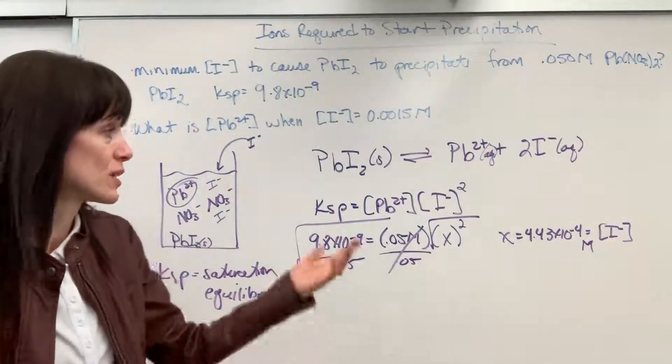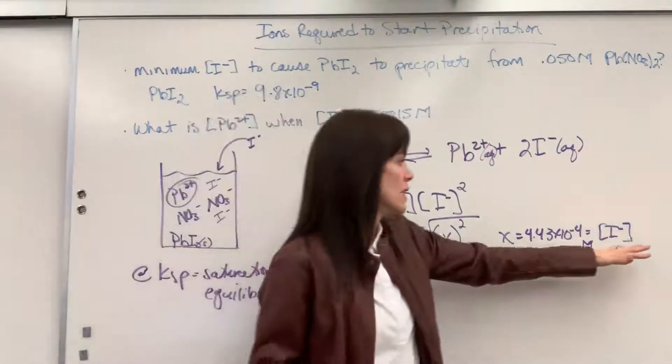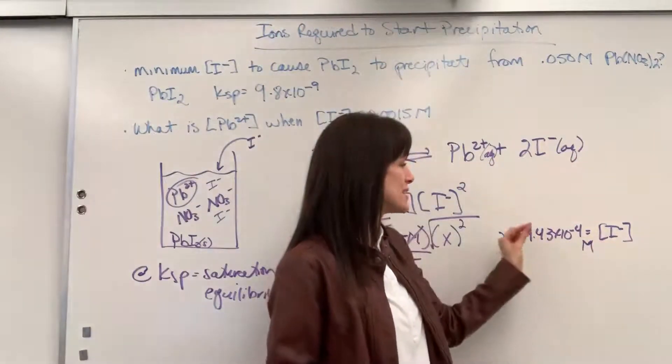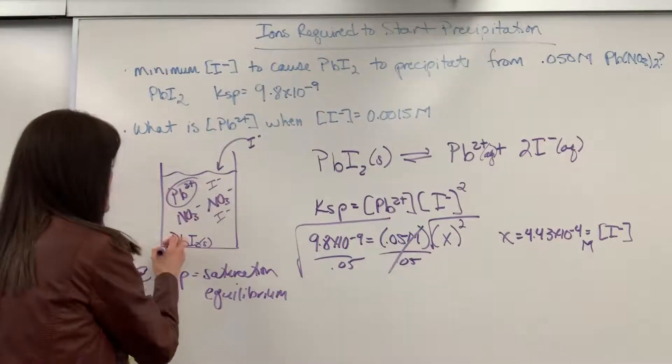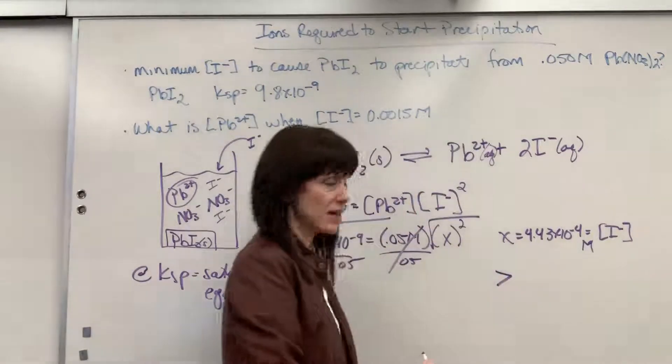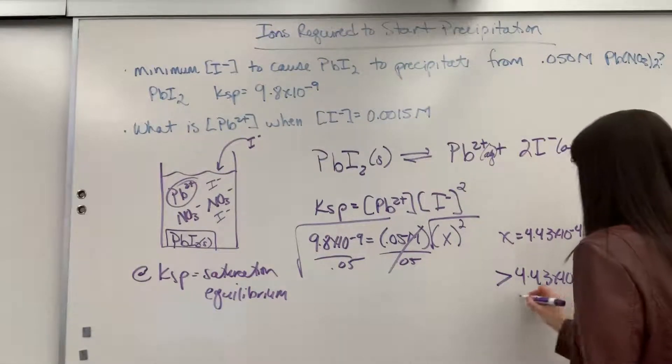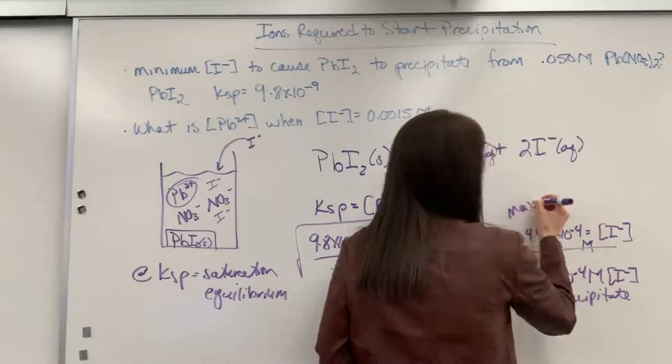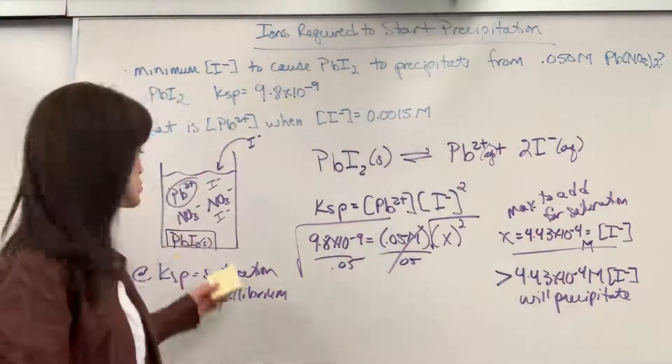Now, they want no precipitate. So here's what I can say. If I add even just a little bit more, one more little piece of salt, whatever this iodide is coming from, maybe like we're dropping a sodium iodide in and getting our iodide from that. If I add just a little bit more of the iodide ion, what's it going to do? It will react with the lead and form that lead iodide solid. So the answer for this is anything greater than 4.43 times 10 to the minus 4 molar of the iodide will precipitate because that is the max to add for saturation. If I add any more than this, it's going to precipitate.